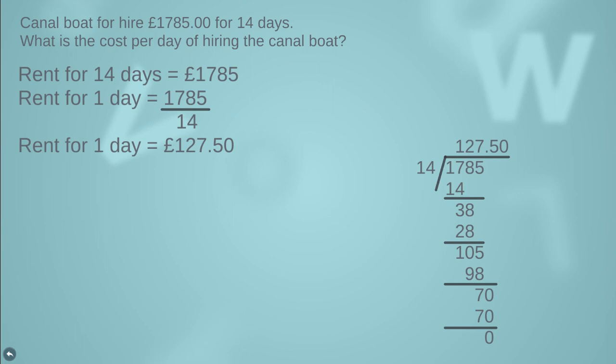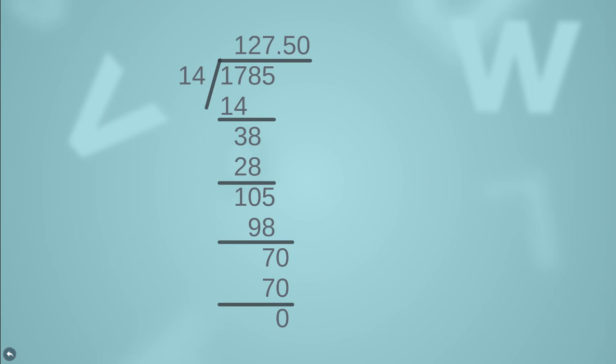Here is another question: a canal boat costs £1,785.00 to hire for 14 days. What is the cost per day? The rent for 14 days is £1,785, so the rent for one day is 1785 ÷ 14. After performing the division, the rent for one day is £127.50.